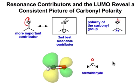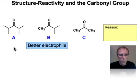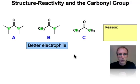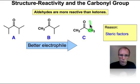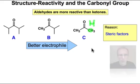Let's take a look at a series of carbonyl electrophiles to understand some structure-reactivity correlations. In this series A through C, we see decreasing size of the group at the α positions. Simply because of the accessibility to the carbonyl electrophile, molecule C is a better electrophile than molecule A. This is a steric factor, and it explains why aldehydes are more reactive than ketones, because in an aldehyde, one of these groups is the small hydrogen atom.